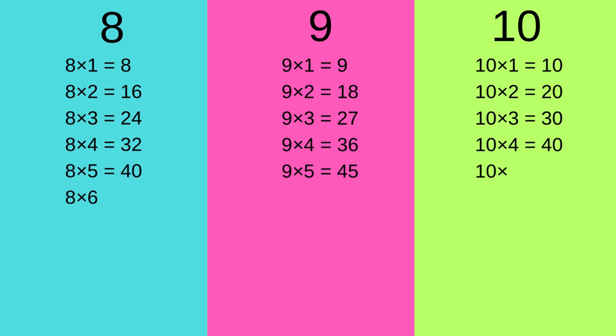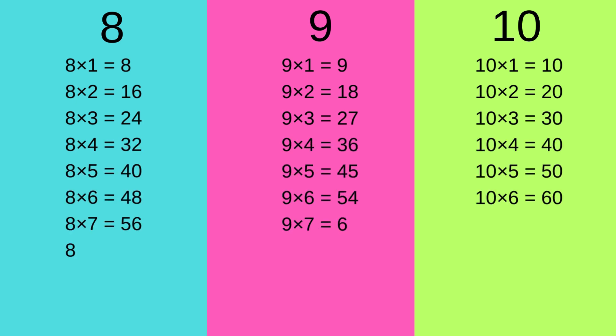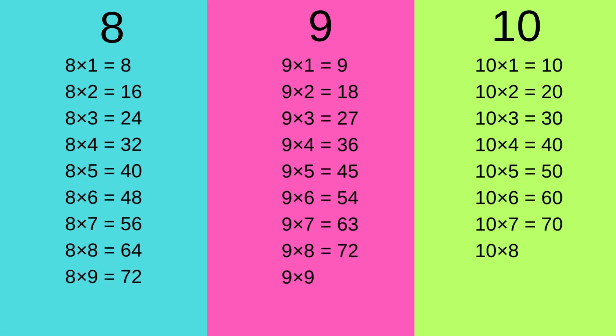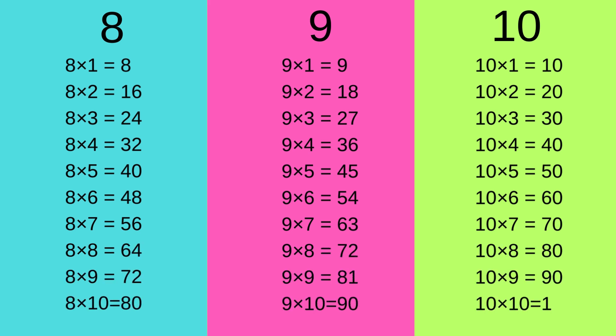First, we will do the table of 8. 8 1's are 8, 8 2's are 16, 8 3's are 24, 8 4's are 32, 8 5's are 40, 8 6's are 48, 8 7's are 56, 8 8's are 64, 8 9's are 72, and 8 10's are...